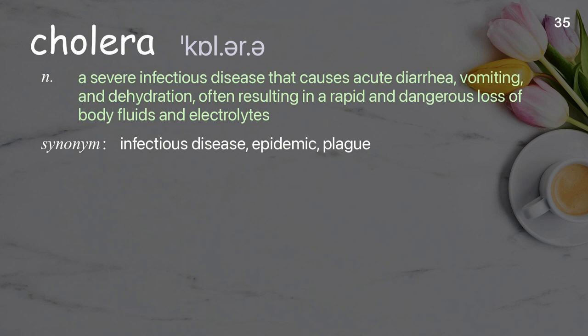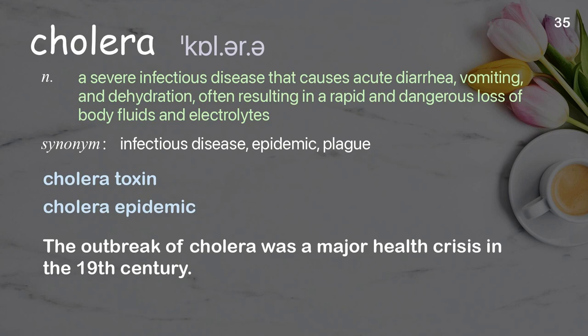Cholera: A severe infectious disease that causes acute diarrhea, vomiting, and dehydration, often resulting in a rapid and dangerous loss of body fluids and electrolytes. Examples: cholera toxin, cholera epidemic. The outbreak of cholera was a major health crisis in the 19th century.